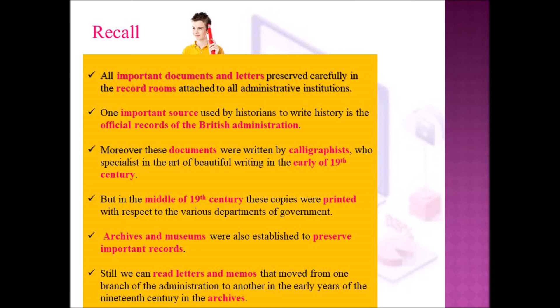Shall we recall from the beginning? The first point we learned today is that one important source used by historians to write history is the official records of the British administration. All important documents and letters were preserved carefully in record rooms attached to all administrative institutions. These documents were written by calligraphists who specialized in beautiful writing in the early 19th century. But in the middle of the 19th century, these copies were printed. Archives and museums were also established to preserve important records. We can still read letters and memos from the early 19th century in the archives.